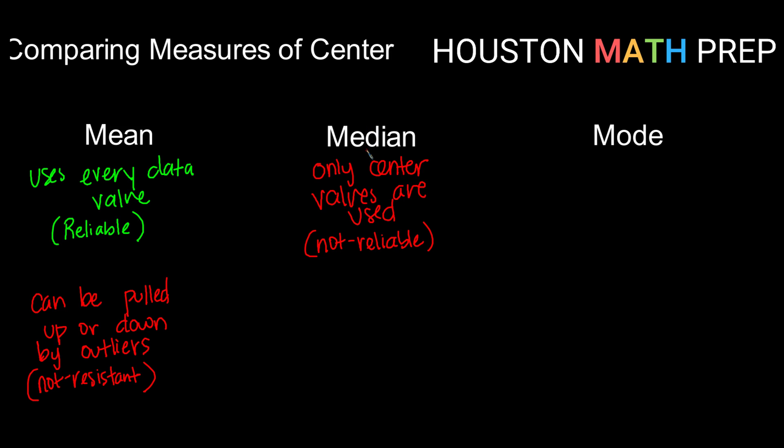The median, though, because it only relies on the center one or two values, is very resistant. Those outliers, those data values that are way at the edges that don't really fit with everything else, they don't affect the median. So a pro of our median is outliers do not affect it.